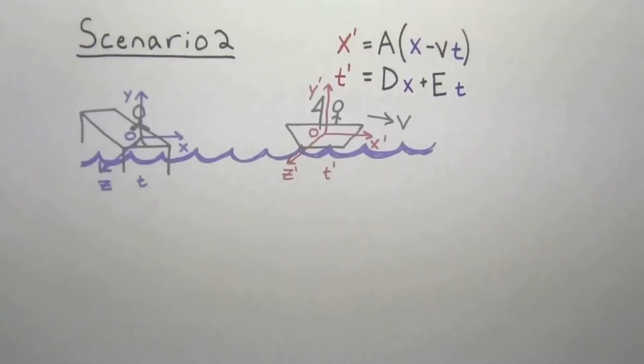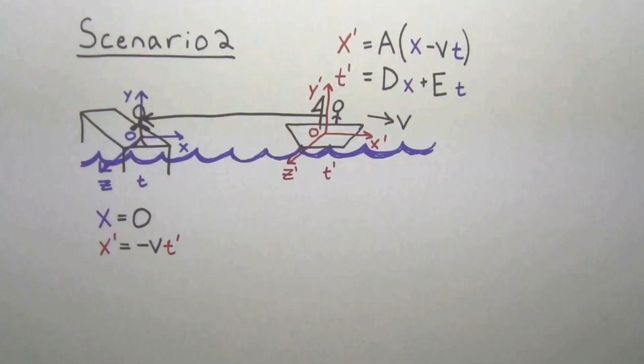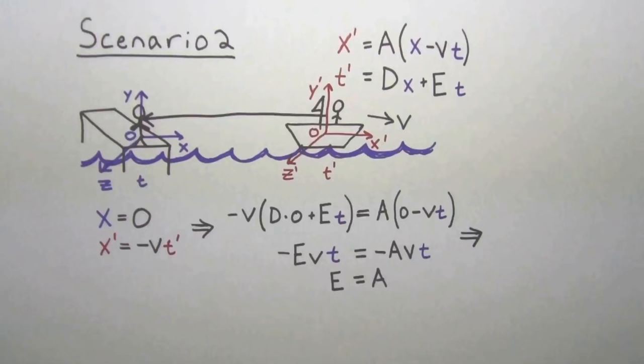The second scenario uses the same boat and dock. However, in this case we want to determine where the location of the dock is from both perspectives. Since the person on the dock doesn't perceive himself to be moving, he would describe his location at the coordinate x equals zero. Since the person on the boat perceives the dock to be moving in the opposite direction with velocity v, he would describe the dock's location at a position minus v t prime. Here we use a prime because t prime denotes how the person on the boat experiences time. Plugging this into our transformation, we get that a equals e, so our new transformation becomes x prime equals a times x minus vt and t prime equals dx plus at.